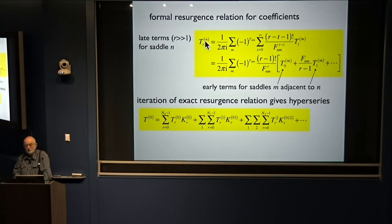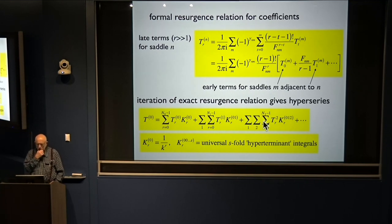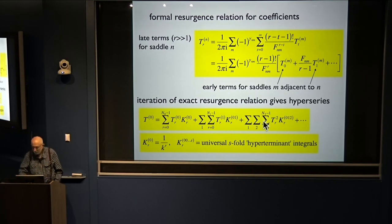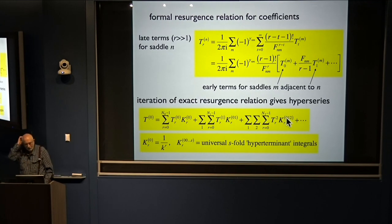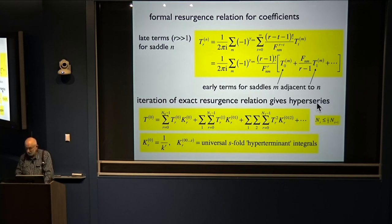For example, given a zeroth saddle, you have sums over all other saddles and multiple sums. At each stage you've got certain integrals — universal S-fold hyperintegrals. We call them hyperterminants; Dingle introduced the term 'terminant' for the first stage. The reason representing an integral in terms of more and more multiple integrals is useful is that these integrals are universal — it doesn't matter what integrals you apply to, provided they have just simple saddles. Each of the series is about half the length of its predecessor, so the theory stops after a logarithmic number of terms.